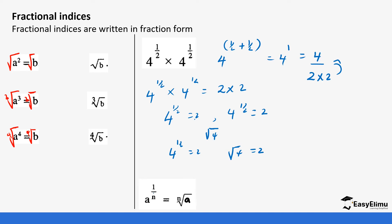This lets us conclude that when a number is raised to a fractional index, it means you get the nth root of that value. So 4^(1/2) means square root because it's one over two. 4^(1/3) is the same as the cube root of 4. 4^(1/4) means the fourth root of 4. That is how our fractional indices work.